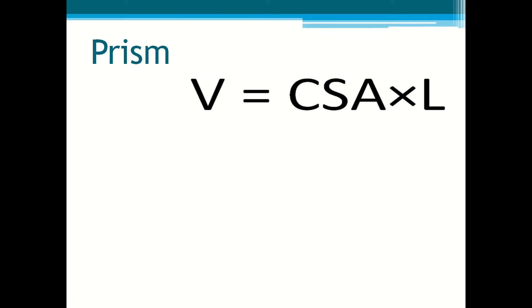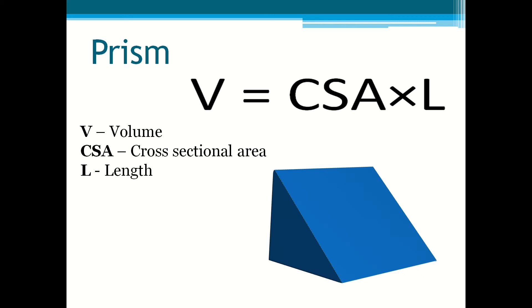Prisms. Volume equals CSA times L. V always stands for volume, CSA stands for cross-sectional area and L is for length. For example here is a triangular prism. The cross-sectional area is the shape of the triangle and the length is how long it is.